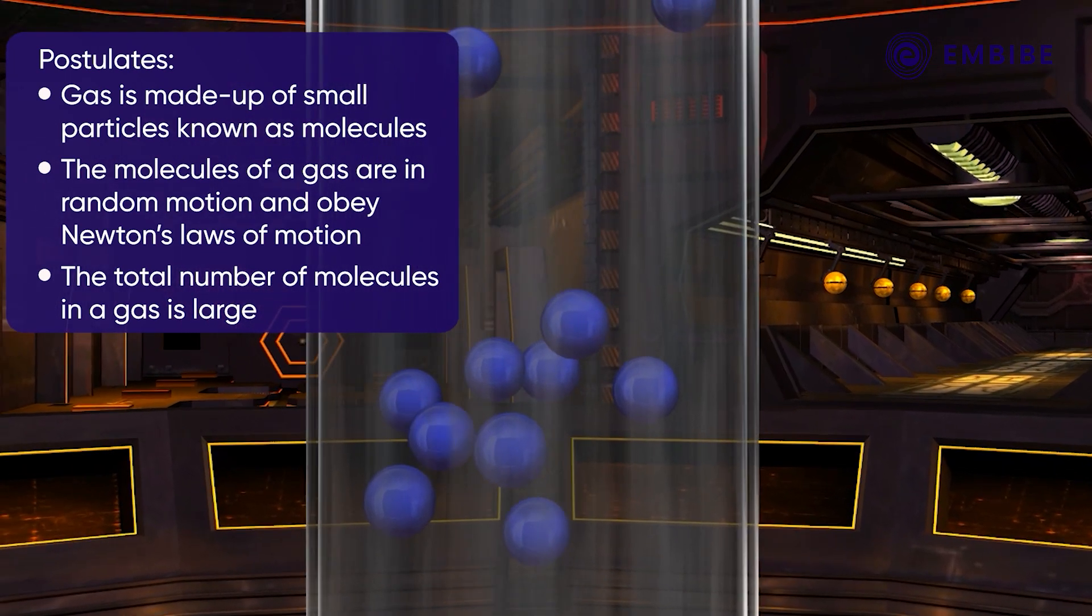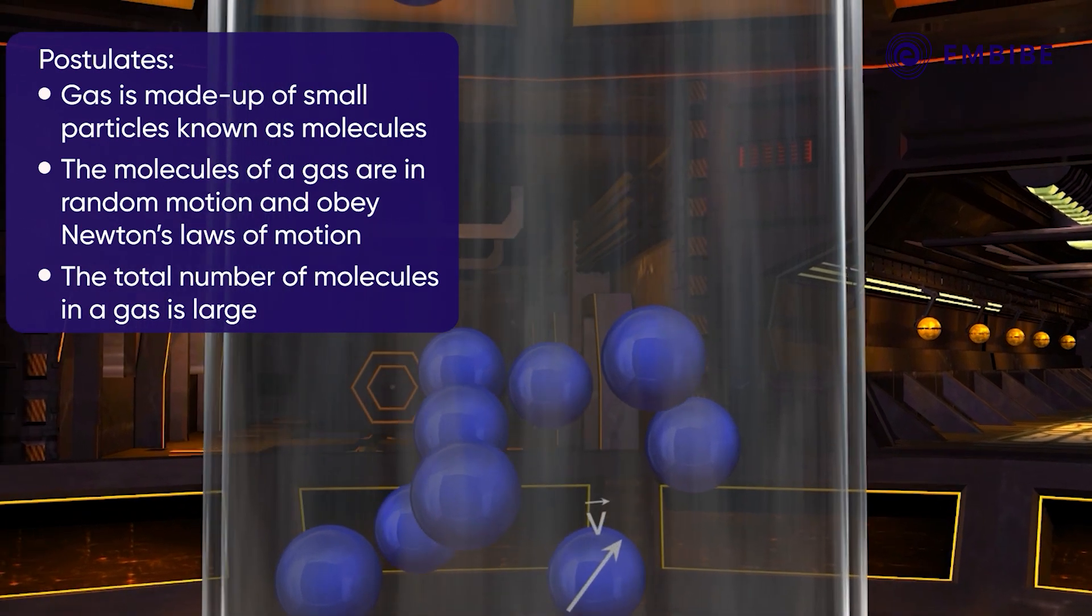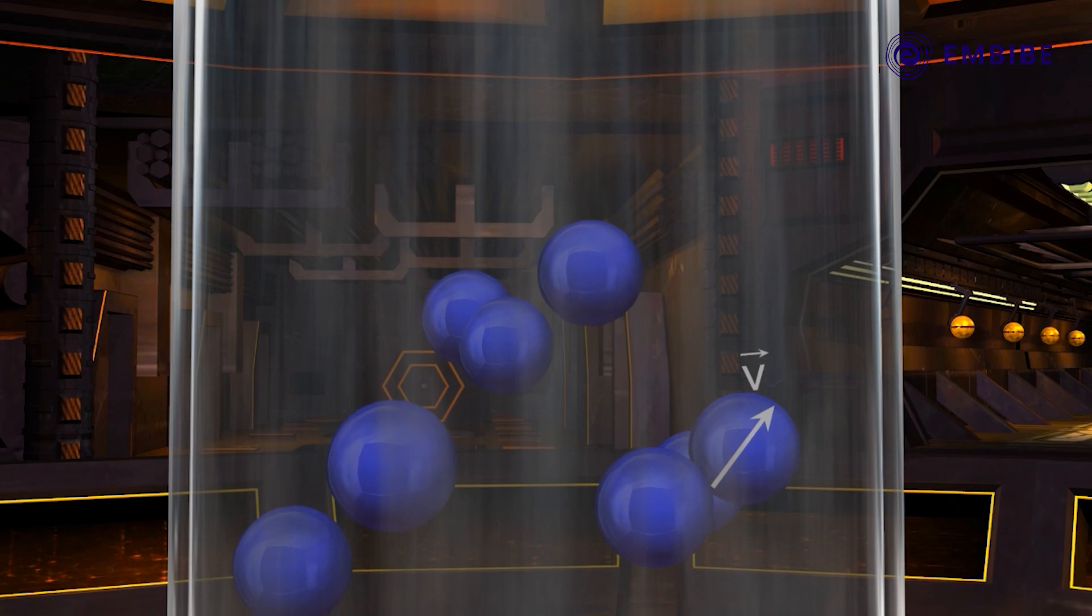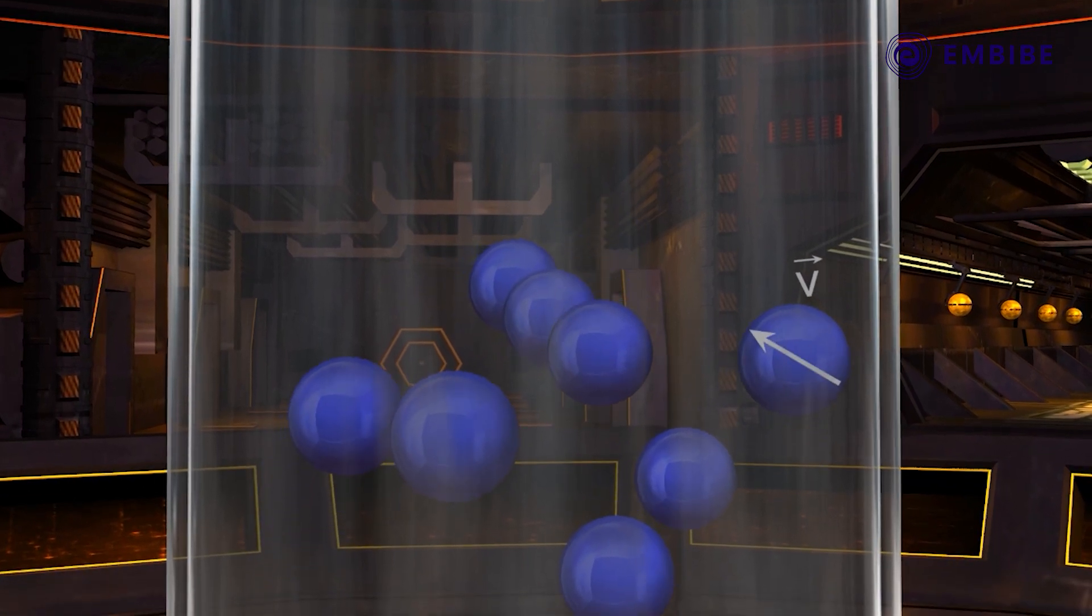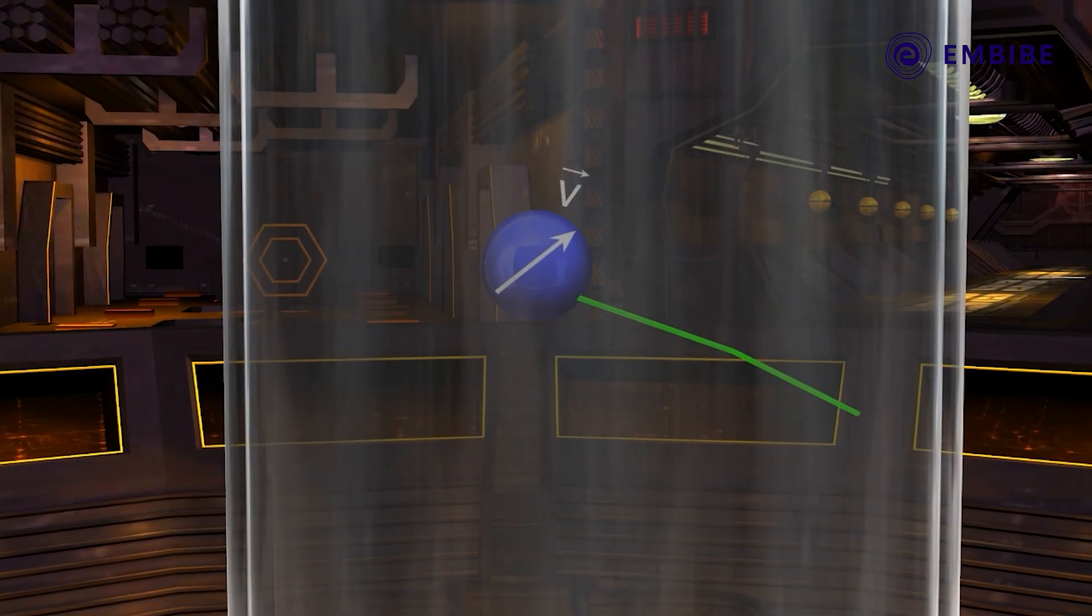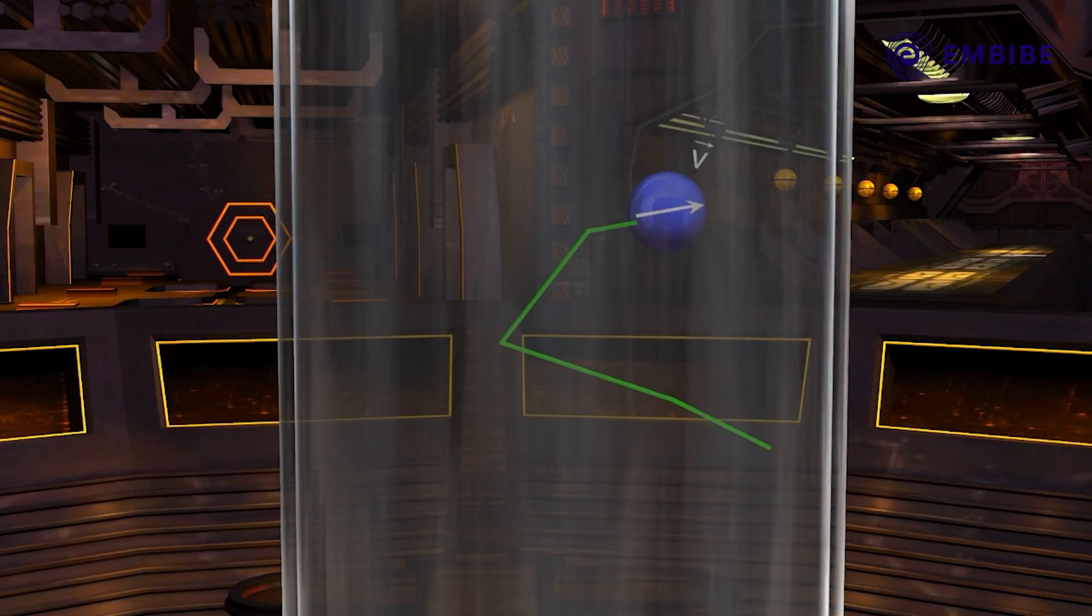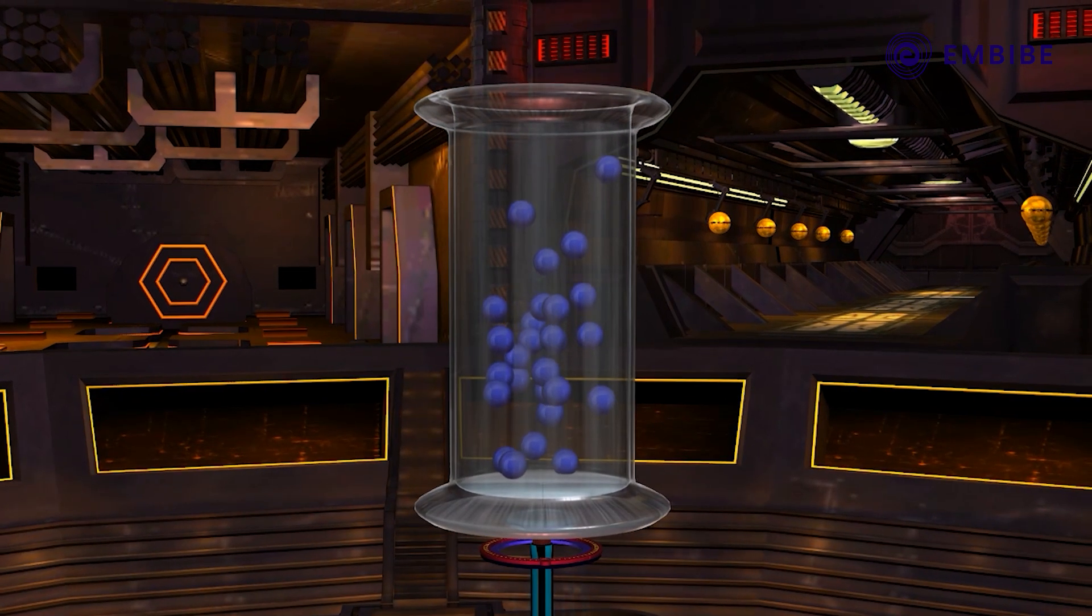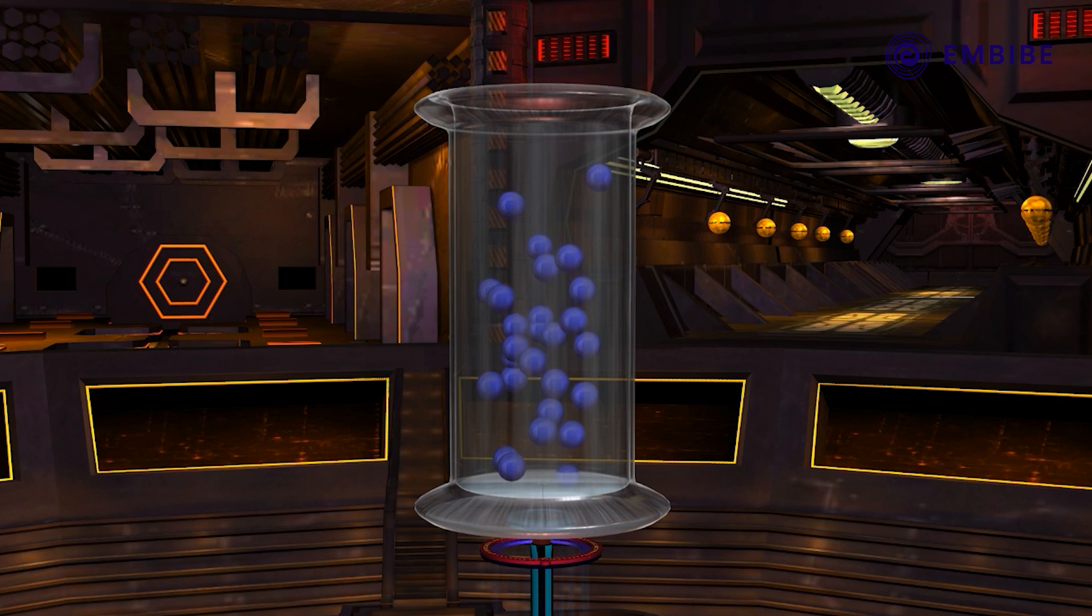The velocity of any molecule while in motion would change abruptly when it collides with another molecule or with the wall of the container. Therefore, the path of a molecule becomes zigzag. Now, if we assume a very large number of molecules, then there will be a correspondingly large number of collisions, and the randomness in the motion will be retained.